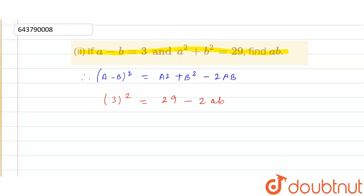So 3 square is equals to 9 and this 29 comes this side will become 9 minus 29 is equals to minus of 2ab.